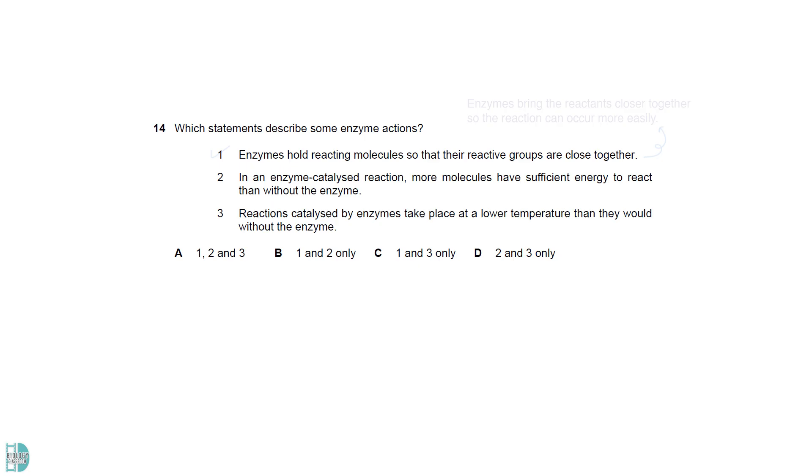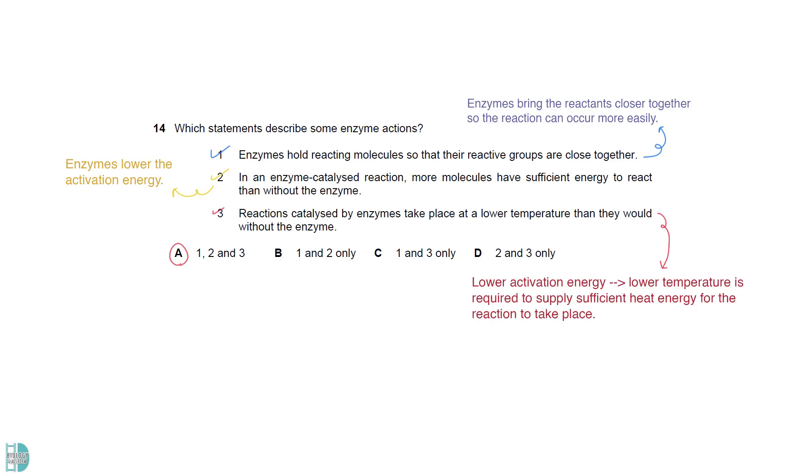Statement 1 is correct. Enzymes bring the reactants closer together so the reaction can occur more easily. Statement 2 is correct as well. Enzymes lower the activation energy so it will be easier for the substrate to have sufficient energy for the reaction to take place. Due to the lowered activation energy, a lower temperature is required to supply sufficient heat energy for the reaction to take place.